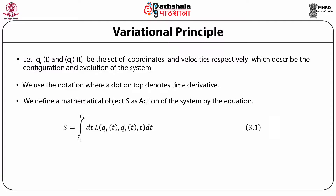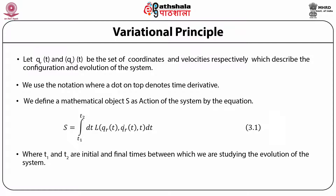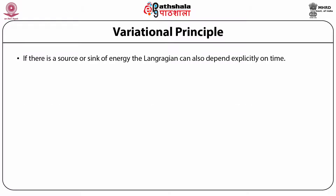We define a mathematical object called action, often denoted by capital S. The action S is written as the integral from time t1 to t2 with respect to dt of a quantity called the Lagrangian, which is a function of qr(t) and qr-dot(t), our position and velocity. It may also depend on time t. T1 and t2 are the initial and final times between which we study the evolution of the system. If there is a source or sink of energy, the Lagrangian can also depend explicitly on time.